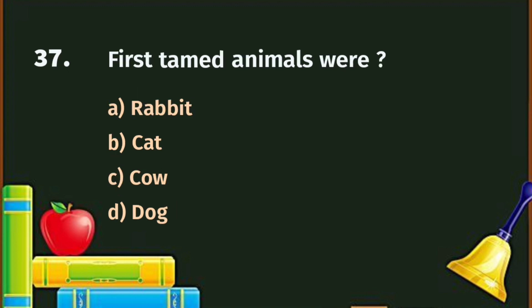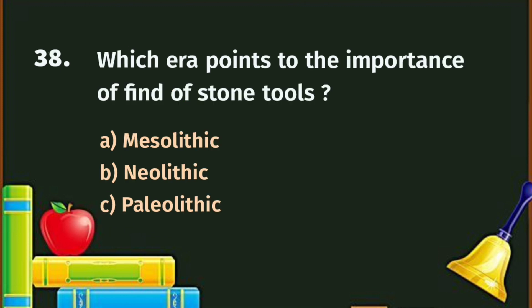Question number 37. First tamed animals were: A. Rabbit, B. Cat, C. Cow, D. Dog. The correct answer is D - Dog.